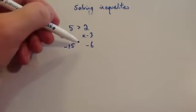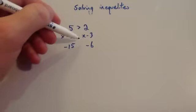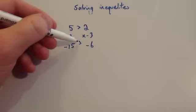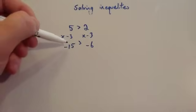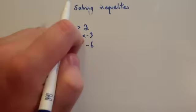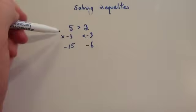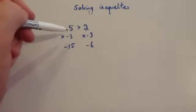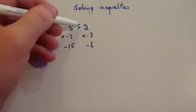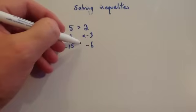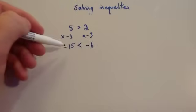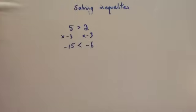Now notice: you can't put 'bigger than' here, because if you said minus 15 is bigger than minus 6, that's wrong — minus 15 is lower than minus 6. So whenever you times an inequality by a negative, or divide by a negative, you actually have to change the inequality sign around. So it would look like this: minus 15 is less than minus 6.